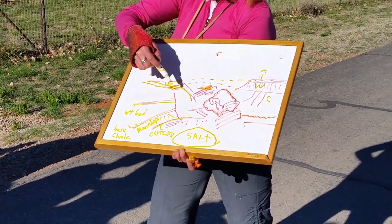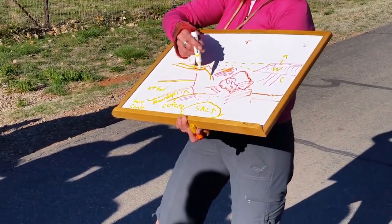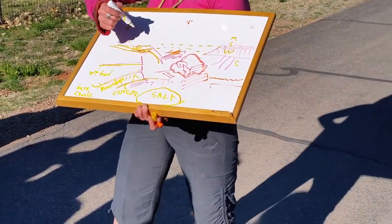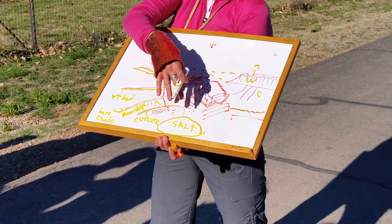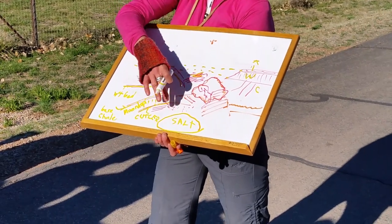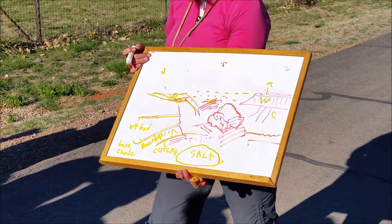And oftentimes, before they collapse, they're anticlinal. So sometimes they're either salt anticlines, and in this case this is a salt rollover.